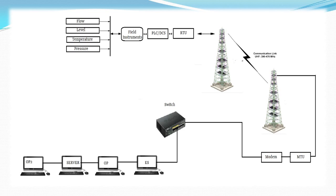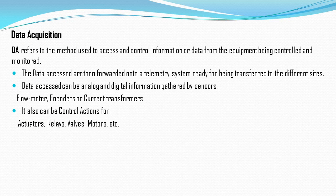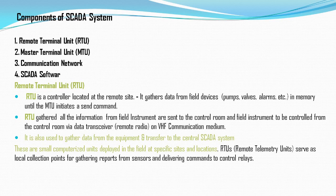Telemetry is the technique used to transmit and receive information or data over any medium — cable, telephone, or radio. In our case, we use radio, and information can come from one or multiple locations. Data acquisition is the method used to access and control information from equipment being monitored. The data from sensors such as pressure, level, and temperature is acquired from the PLC and passed to the RTU — that is data acquisition.